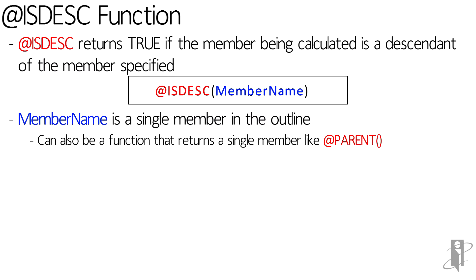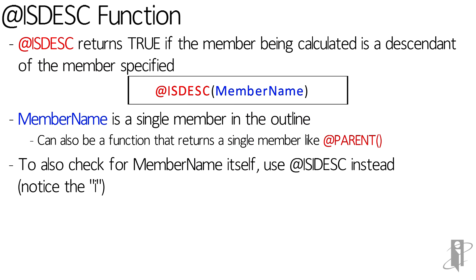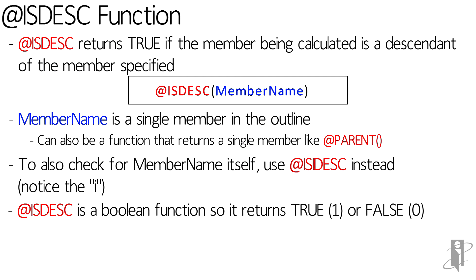It's pretty common when using this function to use the I form, which is IS IDESC, that will check not only if it is a descendant of this member, but also if it is this member itself. It's a boolean function, so it's going to return either a true, also known as a one, or a false, otherwise known as a zero.